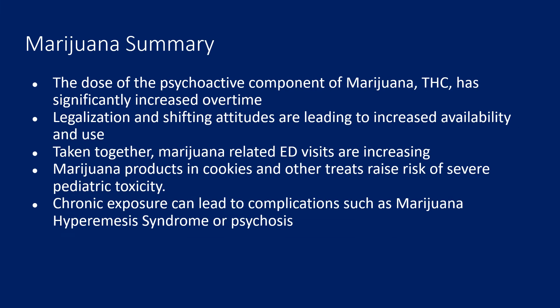To summarize marijuana: the dose of psychoactive component THC has basically been growing over time. Legalization and shifting attitudes are making it more available, leading to increased use. Put that together and we're seeing more people end up in the ER due to marijuana-related issues. Because there are marijuana products such as cookies and other treats that look like kid food, there's a raised risk of severe pediatric toxicity — in little kids, you have to watch out. Watch out for the scene safety of butane hash oil labs. Chronic exposure over a long time can lead to complications such as hyperemesis. There is also some association data with psychosis from prolonged heavy marijuana use.